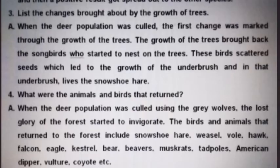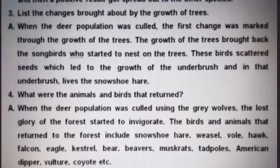The third question: list the changes brought about by the growth of trees. When the deer population was culled, the first change was marked through the growth of the trees. The growth of the trees brought back the songbirds who started to nest on the trees. These birds scattered seeds which led to the growth of the underbrush, and in that underbrush lives the snowshoe hare.